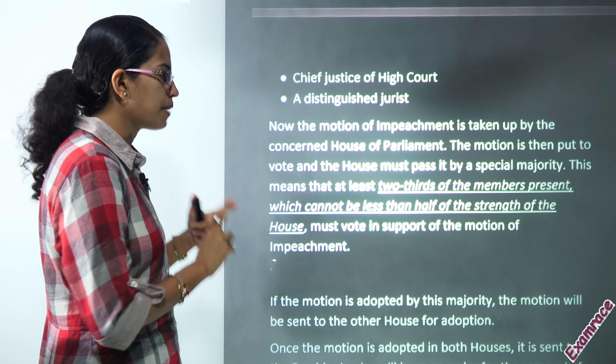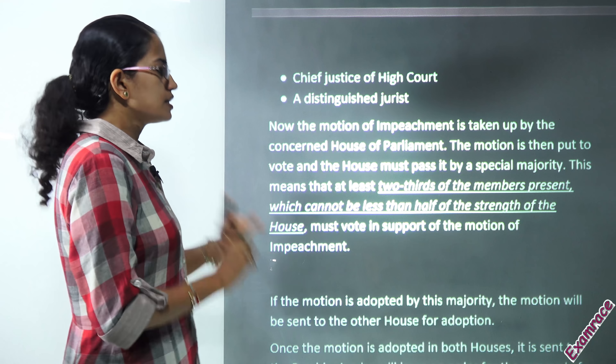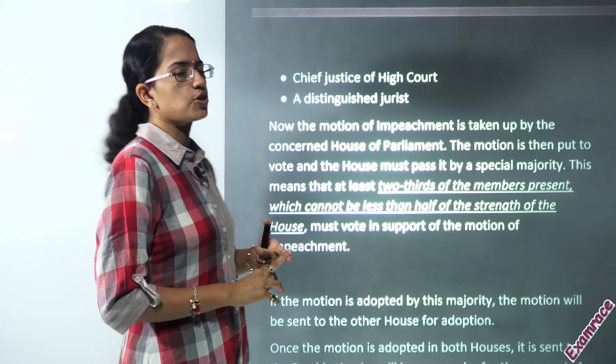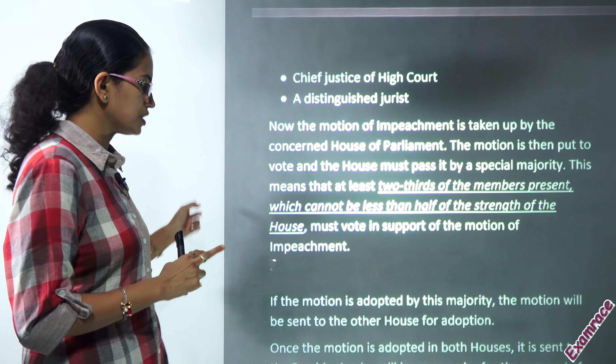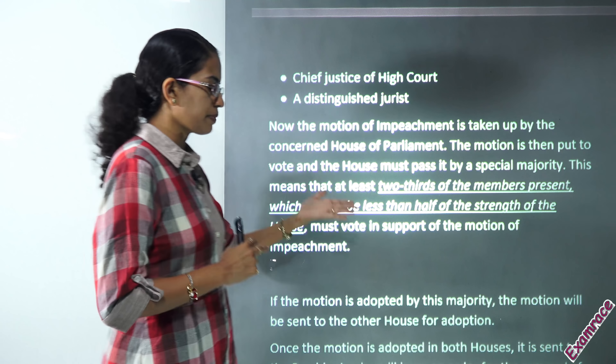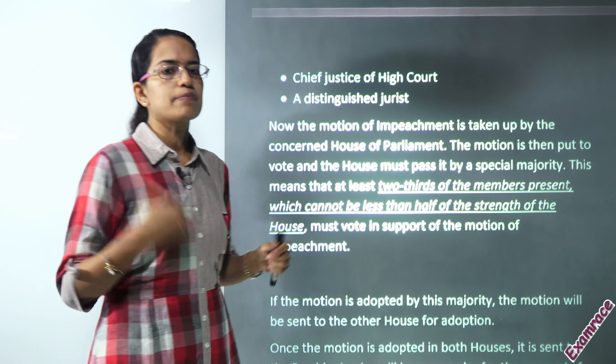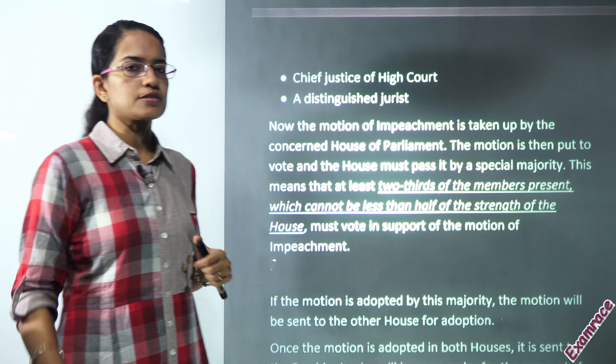Once brought into the house, it should be passed by a special majority. This special majority means two-thirds of the members present and voting, with not less than half of the strength of the total house present on the day the impeachment motion is voted on. This should be passed in both houses, and finally it goes to the president for approval. Ultimately, it is the president who approves and issues the order for the removal of the judge.